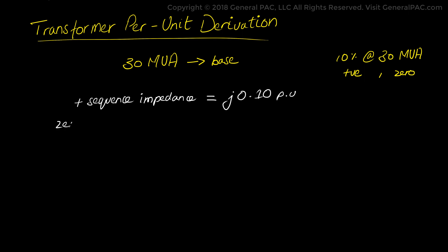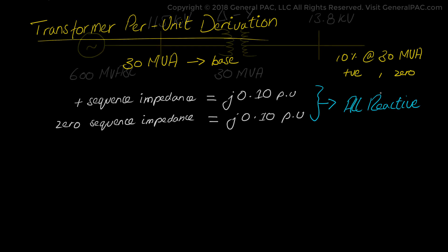Again we assume that the zero sequence impedance is going to be the same so the zero sequence impedance of the transformer is also going to be 0 plus j times 0.10 per unit. Now the 0.10 per unit as seen in the equation is assuming that it's all reactive. So we are going to assume that we don't have a resistive part of the impedance.